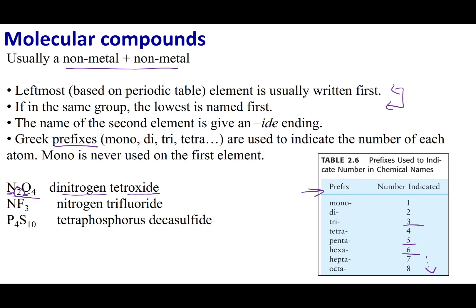So for this example, there are two nitrogens, so I'm going to put dinitrogen. There are four oxygens, so tetraoxide. So this compound right here is called dinitrogen tetraoxide.